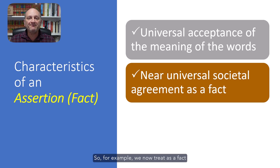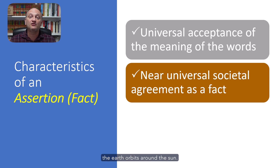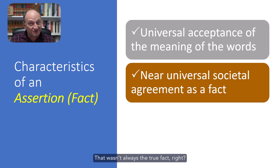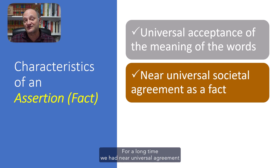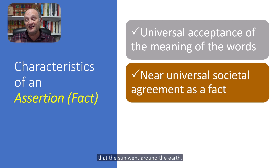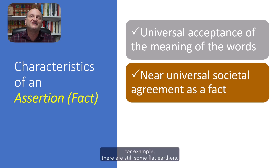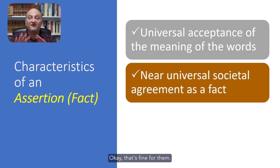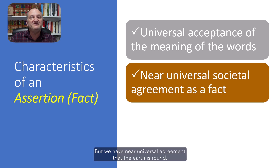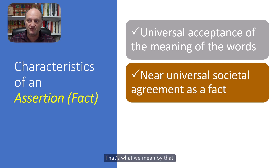We also have to have near universal societal agreement of the facts. For example, we now treat as a fact that the earth orbits around the sun. That wasn't always the case — for a long time, we had near universal agreement that the sun went around the earth. When I say near universal, for example, there are still some flat earthers, but we have near universal agreement that the earth is round. That's what we mean by that.